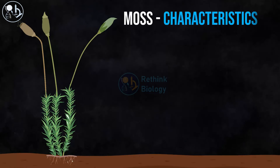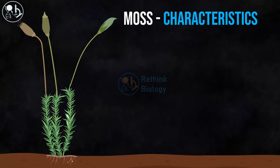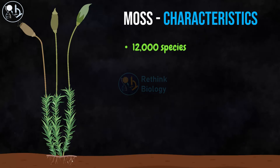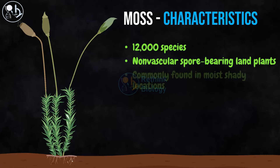There are almost 12,000 species of mosses all over the world. They are non-vascular and reproduce through spores, and are generally found in moist and shady areas.